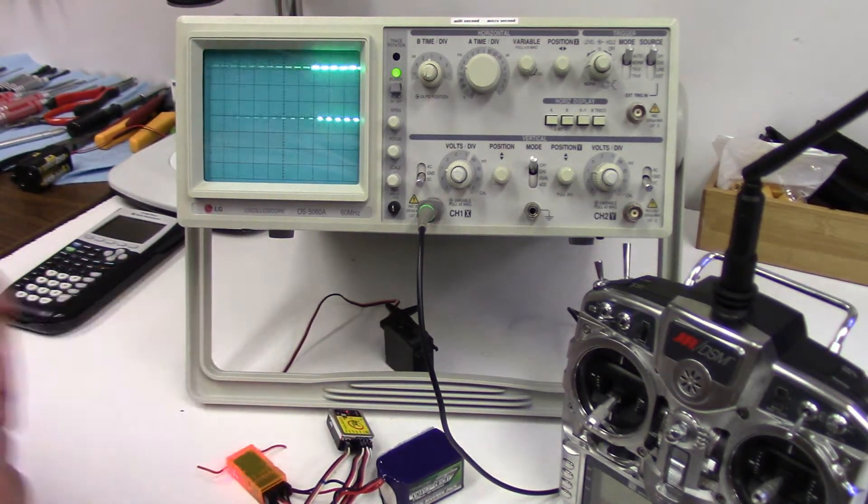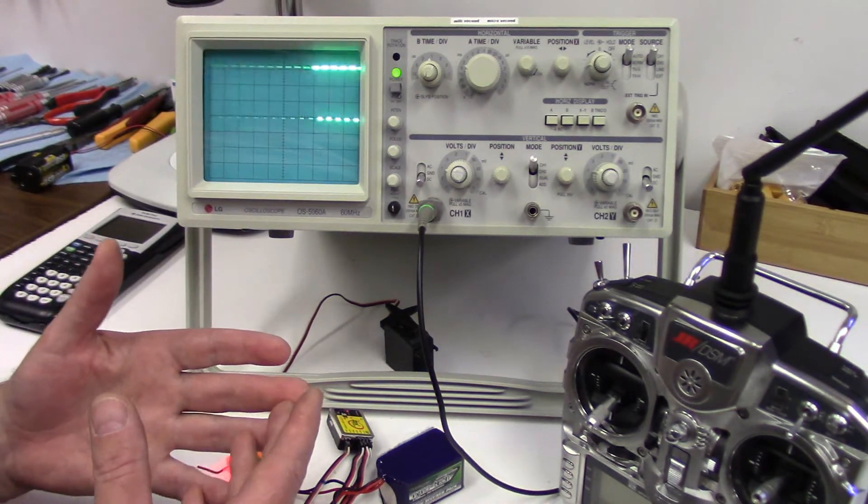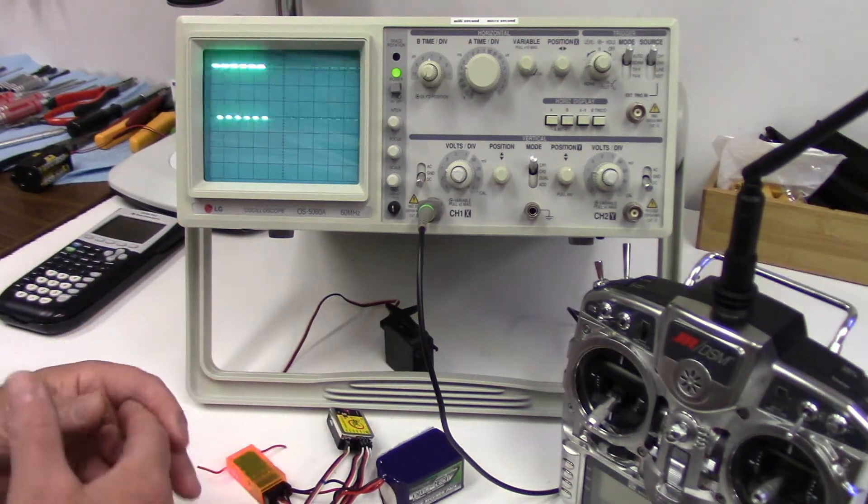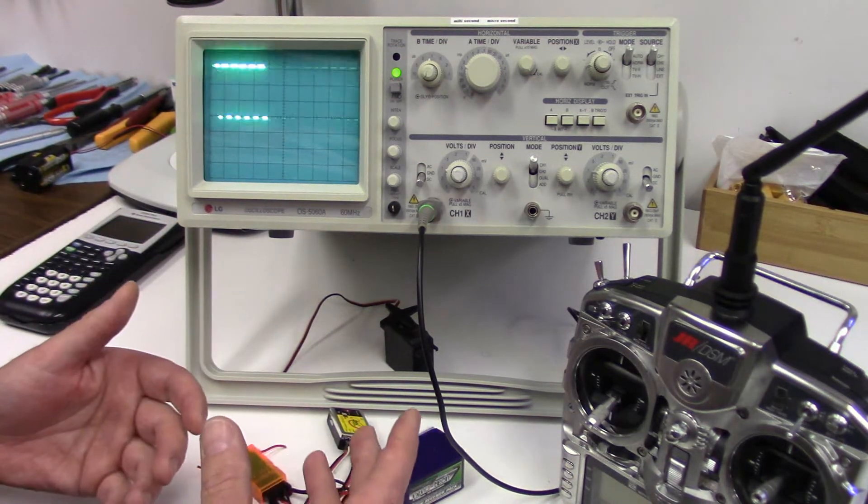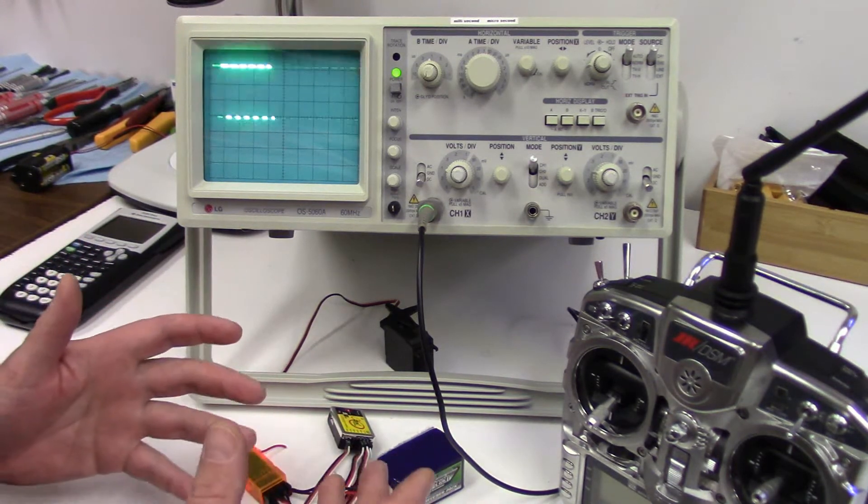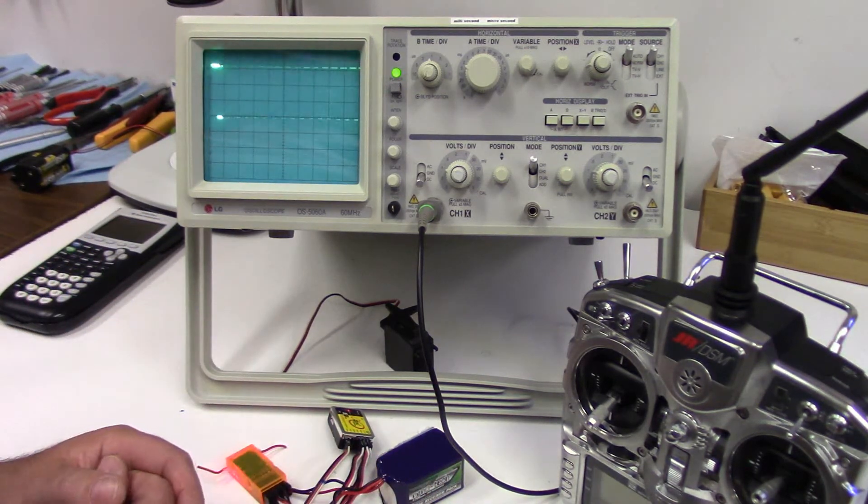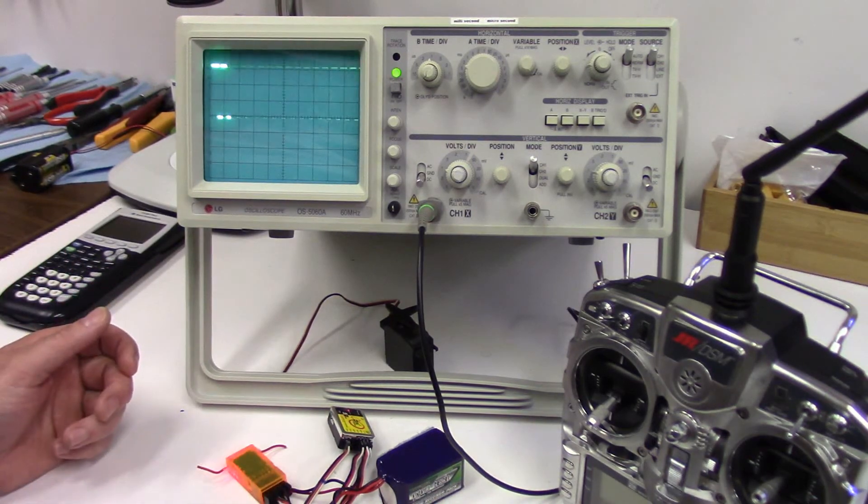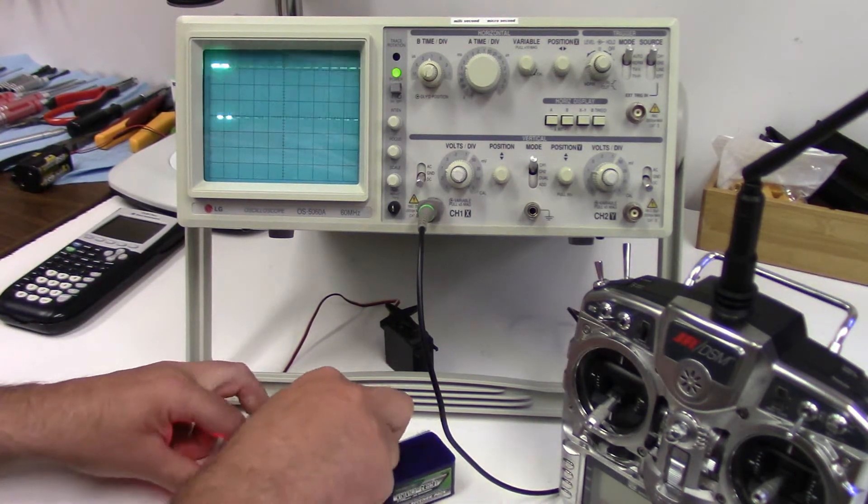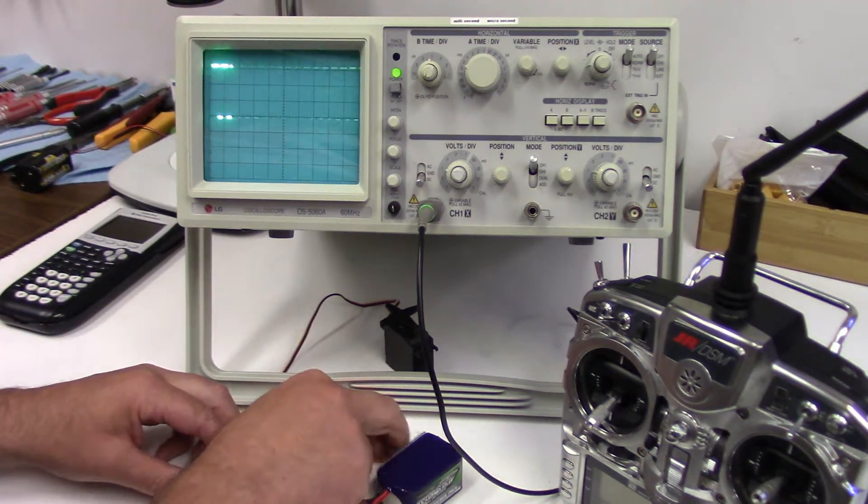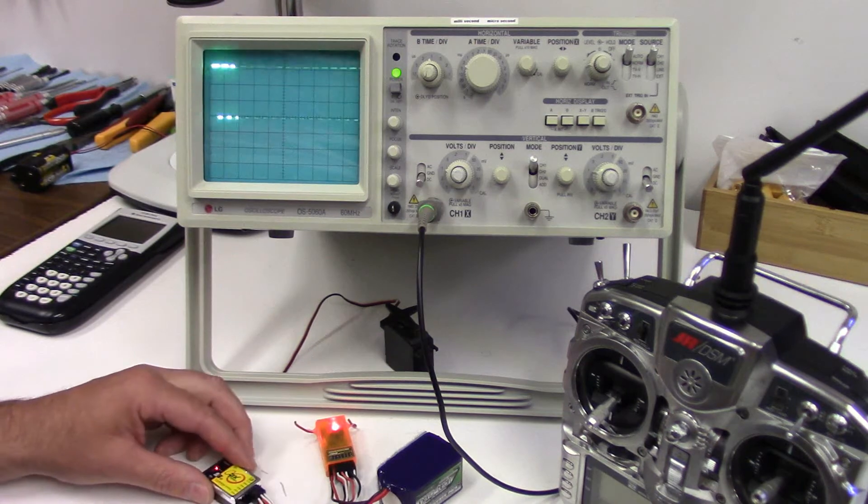The reason for that is your servo is just getting more information, more commands every second. Instead of 50 times a second, it's getting positioning commands 333 times a second, which is needed to hold the tail super crisp. Also why super fast digital servos are required if you're running that kind of frequency.